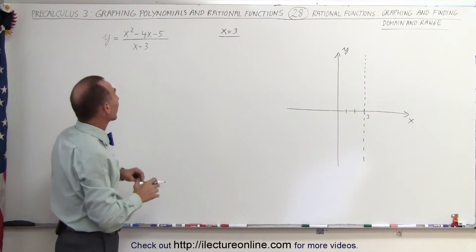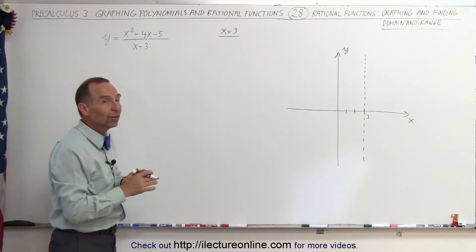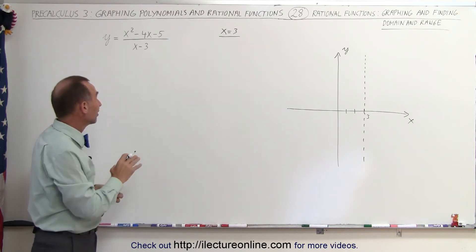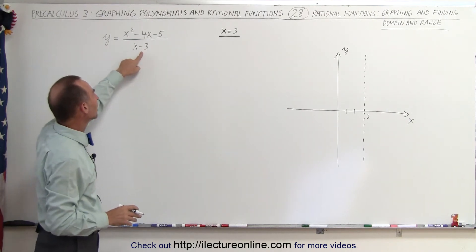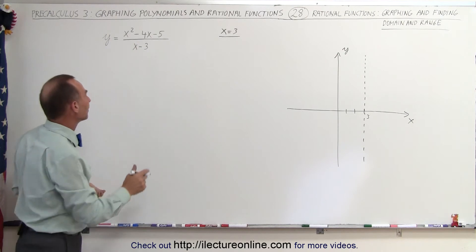The next step is to look at the denominator and the numerator together to see if there's any other asymptotes. And there is at least one, but the way to find that one is to divide the denominator into the numerator to see what we get. So let's do that.